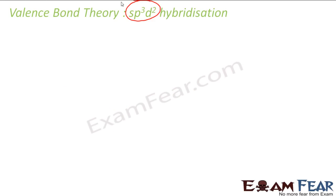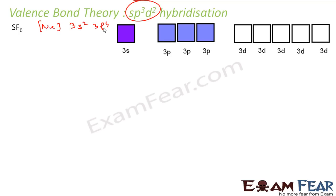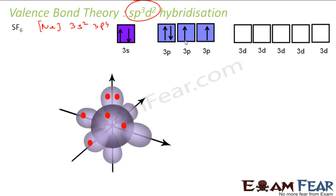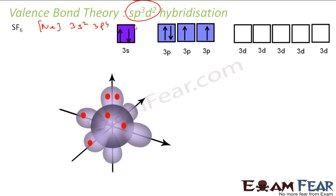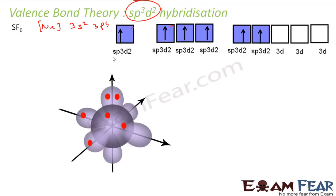Let's take the example of SP3D2 hybridization with SF6. Sulfur has the electronic configuration of Ne 3s2 3p4. Drawing just the outermost shells: 3s has 2 electrons, and 3p has 4 electrons — one orbital with 2 electrons and two orbitals with 1 electron each. Now one electron moves from 3s to 3d, and another moves from 3p to 3d. They form SP3D2 hybrid orbitals.